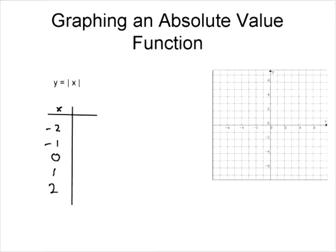So the absolute value of negative 2 is just going to be 2. It's just going to make that positive. Absolute value of negative 1 is 1, 0 is 0, 1 is 1, 2 is 2.